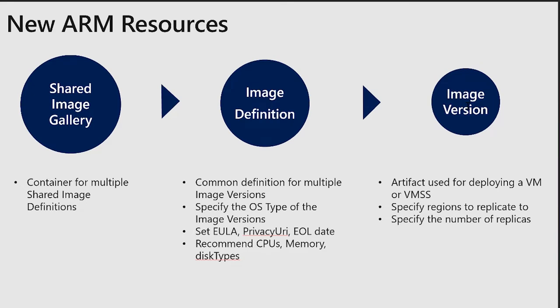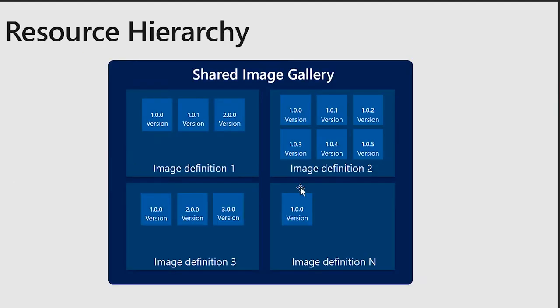It's just like nesting dolls — the Russian dolls. What you have is the Shared Image Gallery as the outer container. You have multiple image definitions inside it, and then you can have multiple versions inside each definition. We follow semantic versioning for the name of the version, so you can define whatever makes sense for you — 1.0 or 10.0 even first. The versioning is completely up to you.